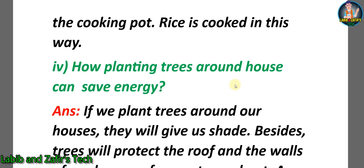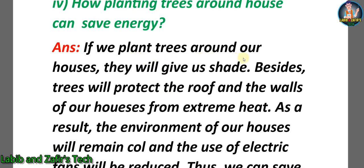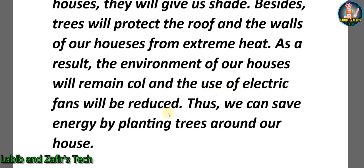Now our fourth question: how can planting trees around the house save energy? Answer: if we plant trees around our houses, they will give us shade. Besides, trees will protect the roof and the walls of our houses from extreme heat. As a result, the environment of our houses will remain cool and the use of electric fans will be reduced. So this way we can save energy by planting trees around our house.